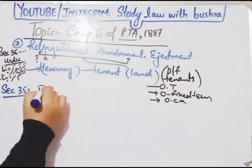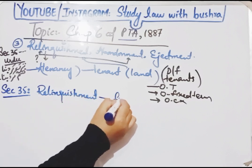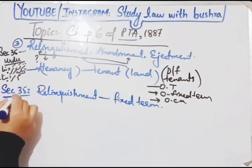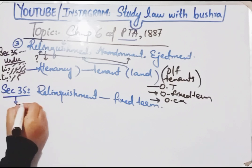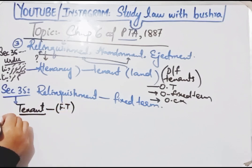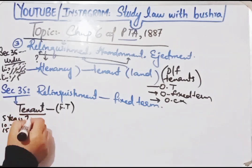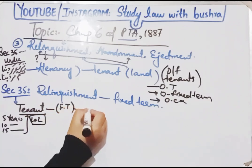Section 35 baat karta hai relinquishment by a tenant for the fixed term. Fixed term ke jo tenants hain wo apni tenancy ki relinquishment kis tarah se karenge. Agar koi tenant fixed term ke liye — for example 5 saal, 10 saal, 15 saal ka contract hai — ek khaas term ke liye zameen landlord se hasil ki hai,